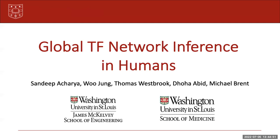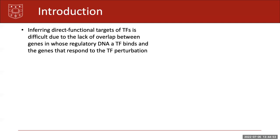Today we'll talk about global TF network inference in humans. The main motivation for this project stems from the fact that inferring direct functional targets of TFs is difficult due to the lack of overlap between genes in whose regulatory DNA a TF binds and the genes that respond to the TF perturbation.